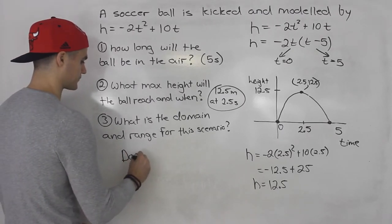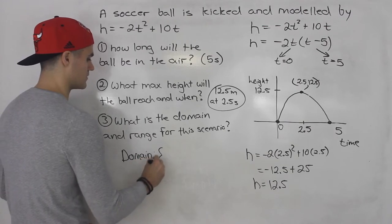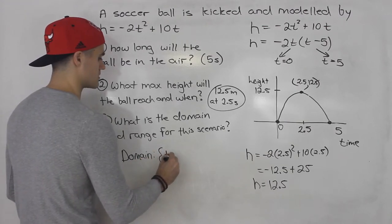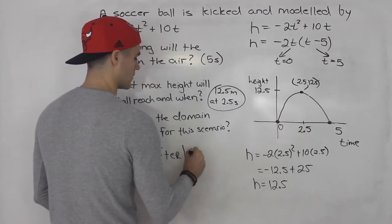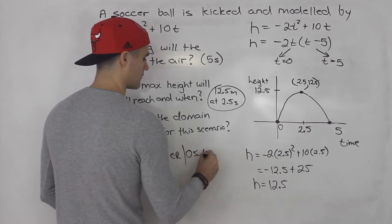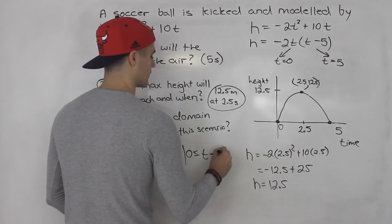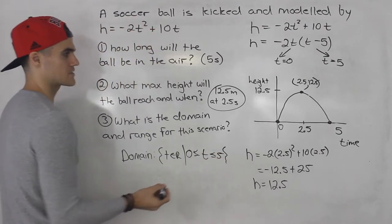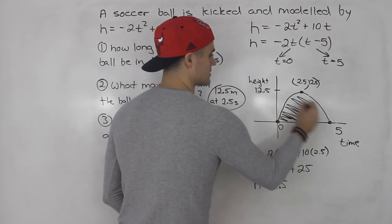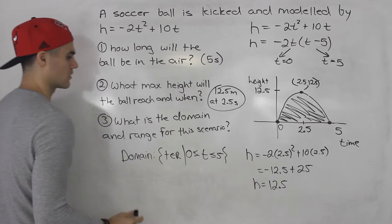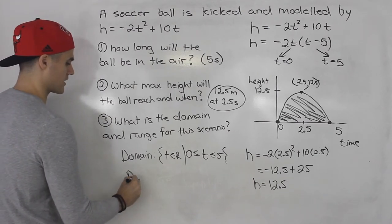So here, domain is time can be anything, but it has to be between 0 and 5. Right? That's when the ball's height is modeled. So it's only happening for that. And what's the range?